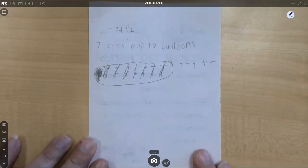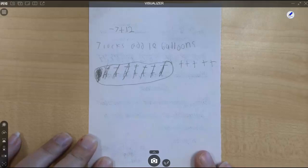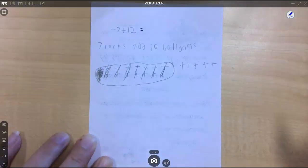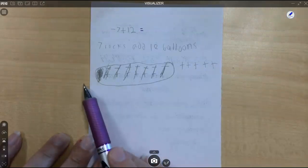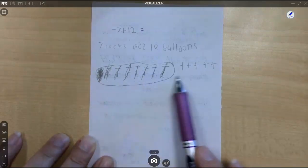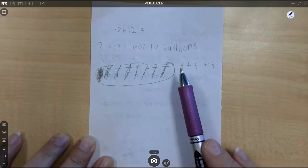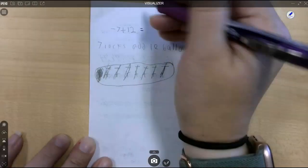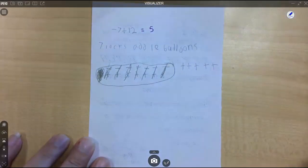So you guys might be wondering what is the mistake? They didn't answer the question. It's a beautiful model. We can see exactly what they're thinking, but they haven't told me what negative seven plus 12 is. So let's finish up this problem for them. Here's our seven rocks. Here's all of our 12 balloons. There's the zero pairs. What is it that I still have? Five positives. So five positives is positive five. That's all it would take to turn that no into a yes.